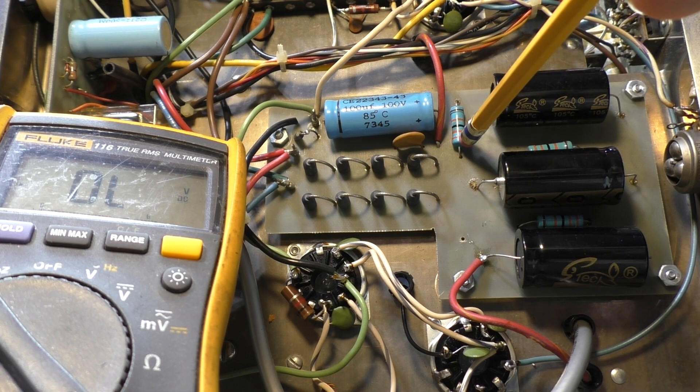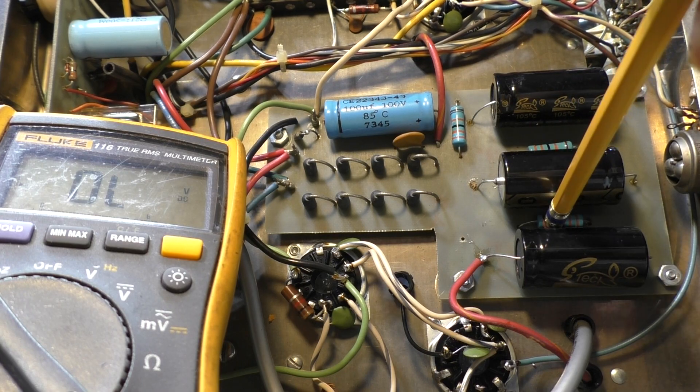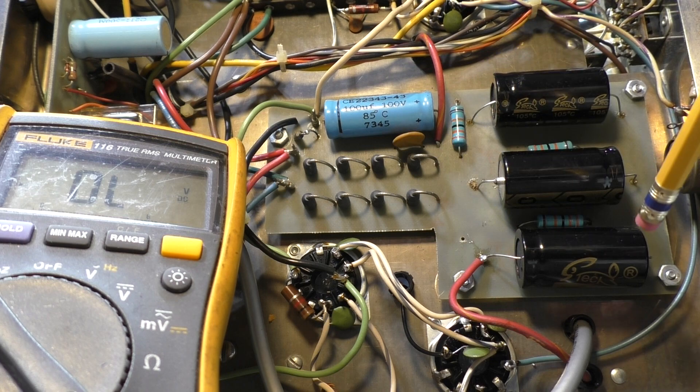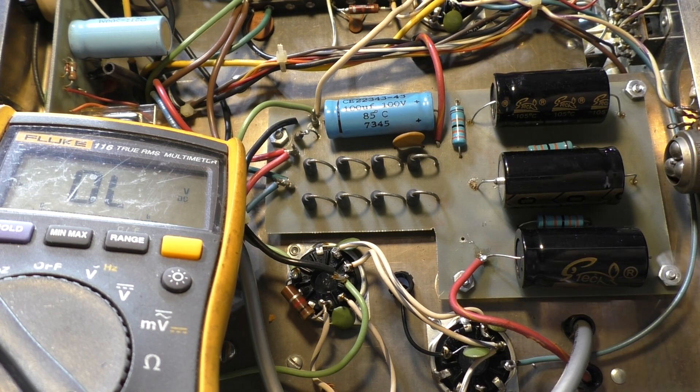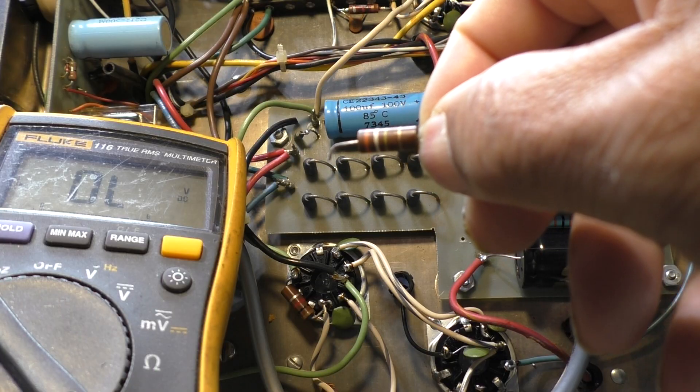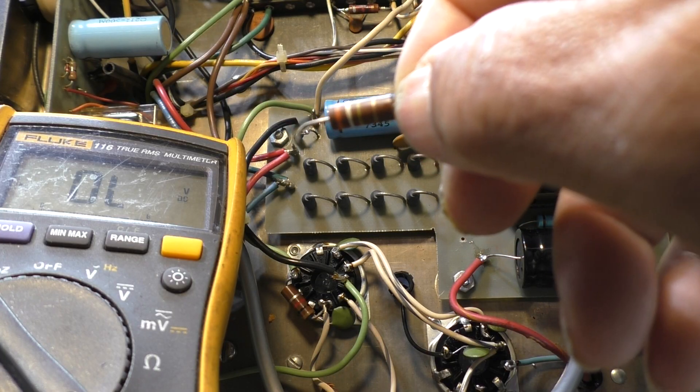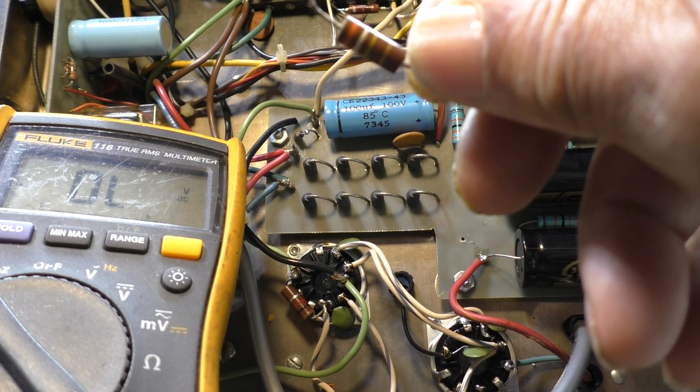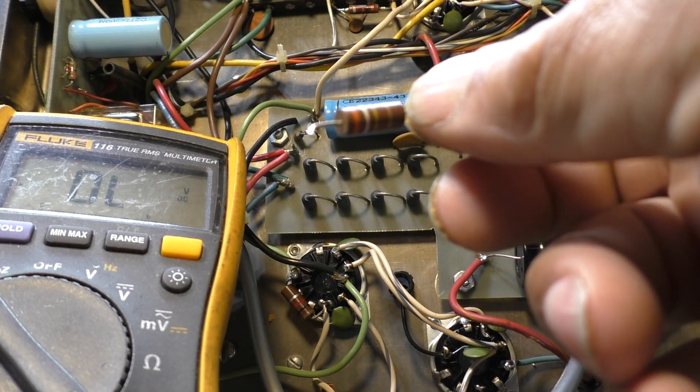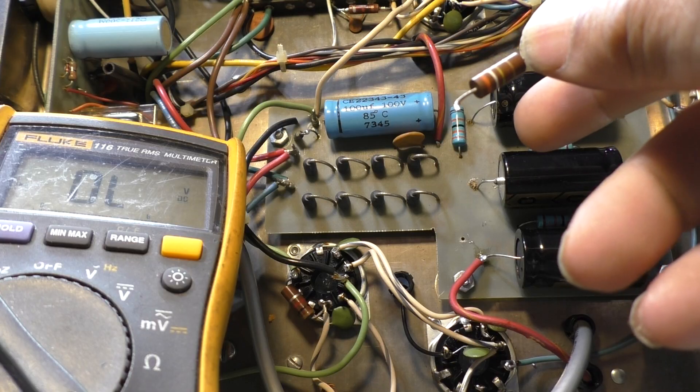What happens over time is if the bleeder slash equalizer resistors get out of tolerance. These are 330k resistors, they're new and one percent tolerance so they're very accurate. But these old ones in there, old carbon resistors, over age and heat and time their values go up and they get out of tolerance so they're not equal.